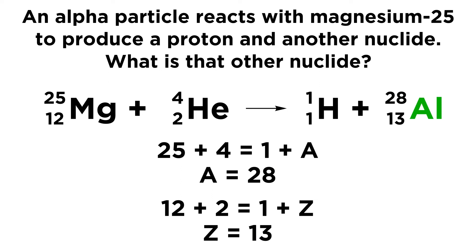So if this nuclide has an atomic number of 13, by definition it must be aluminum, so we can put an Al there, and that is the nuclide in question. We have aluminum-28.